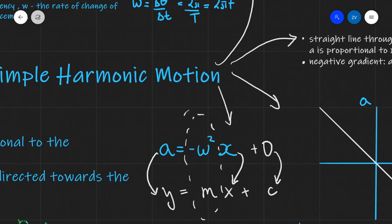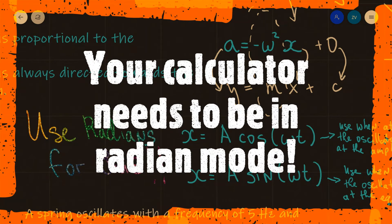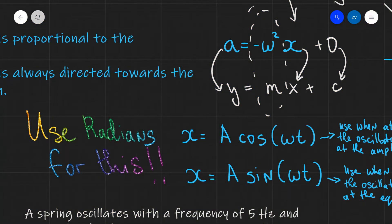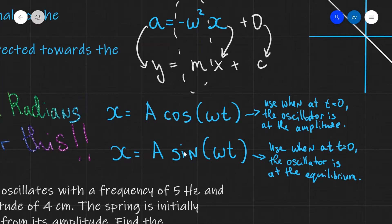Now let's look at solutions to the defining equation for SHM, a = −ω²x. There are two solutions for x: x = A cos(ωt) and x = A sin(ωt). We must always use radians — so your calculator needs to be in radian mode to solve these equations. We use x = A cos(ωt) when at t = 0 the oscillator is at the amplitude position; for example, if we release a pendulum from the amplitude. We use x = A sin(ωt) when at the initial time the oscillator is at equilibrium. This is because cosine starts from the amplitude and sine starts from the origin.